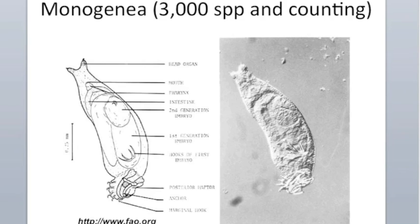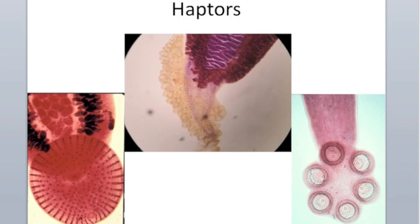Monogenians are ectoparasites, meaning they live on external surfaces of the host or surfaces open to the environment, such as the gills. Because of their high host specificity, they are highly adapted for holding on to a very particular part of the host.